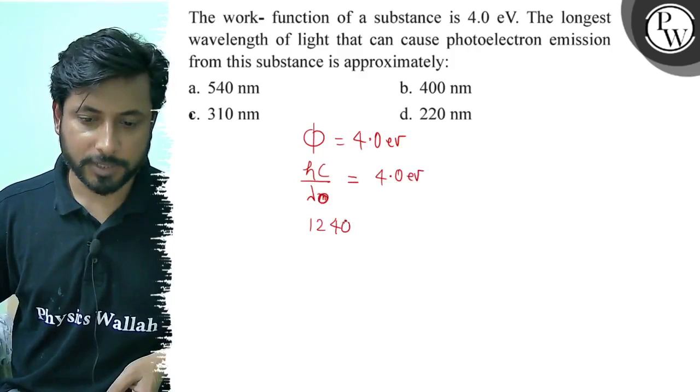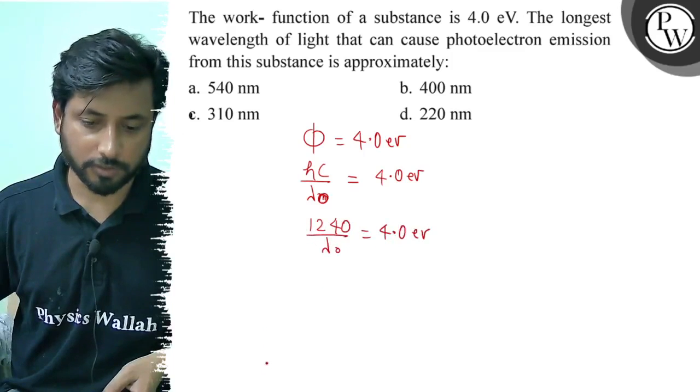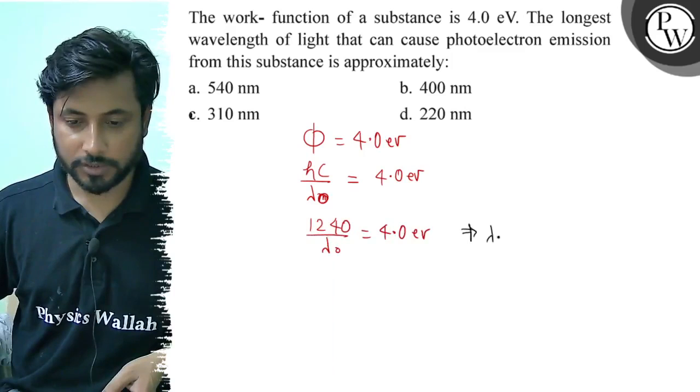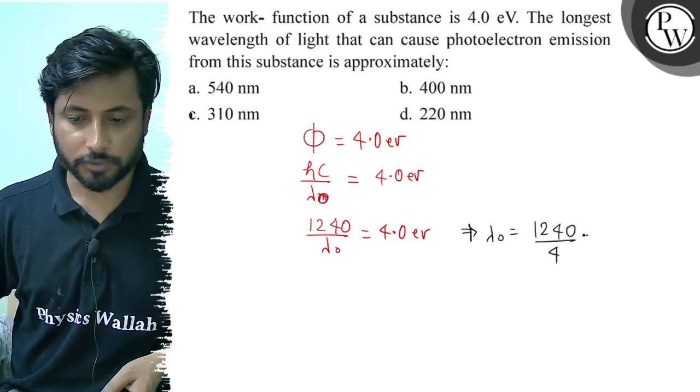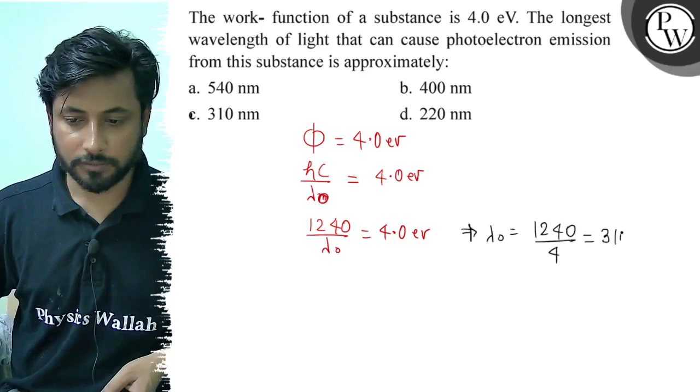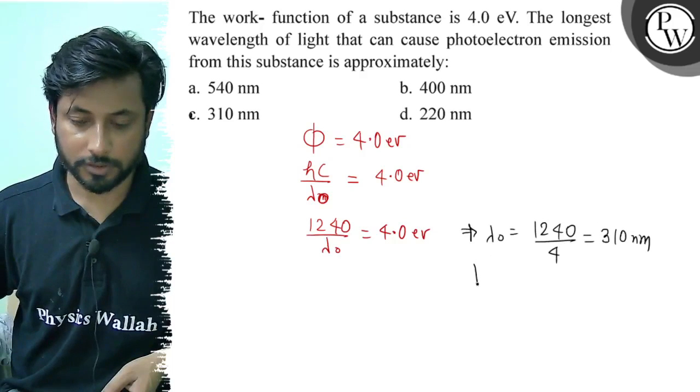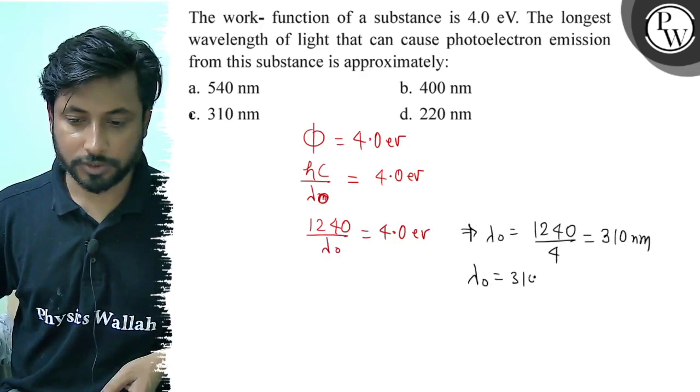1240 divided by lambda nought equals to 4.0 electron volt. Now hc by lambda nought is the answer. So lambda nought is 1240 divided by 4. So here we get 310 nanometer. Lambda nought equals 310 nanometer.